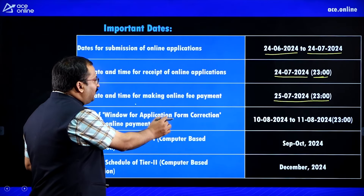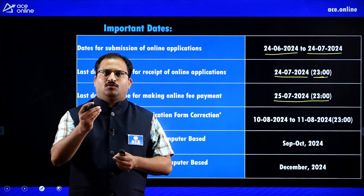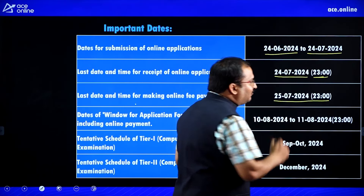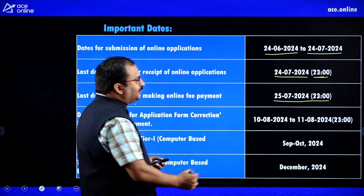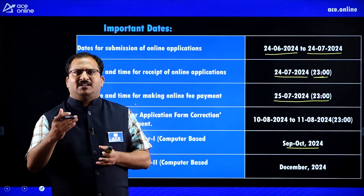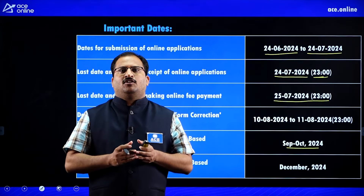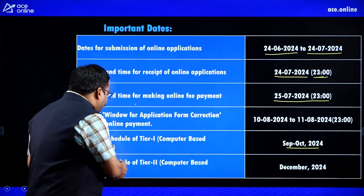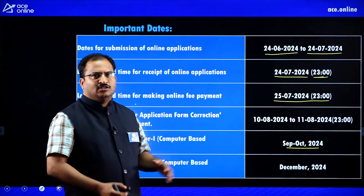The dates for the application form correction window — if there are any mistakes committed during online application uploading — the correction window is provided between 10th August 2024 to 11th August 2024 up to 11 PM. The tentative schedule of Tier 1 computer-based examination is September to October 2024. The examination will be conducted on multiple dates and multiple sessions with normalization of the paper. The tentative schedule of Tier 2 computer-based examination will be in December 2024.